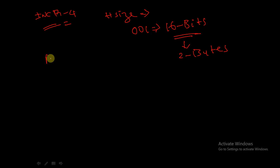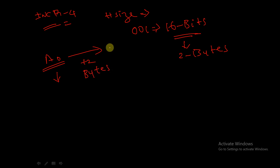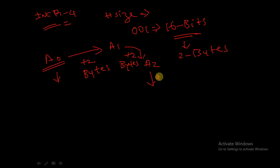So in this case the starting address — let us say a0 — and it will increment by plus 2 bytes. So it will be equal to a1, and next it will be plus 2 bytes which is equal to a2, and next plus 2 bytes which is equal to a3.